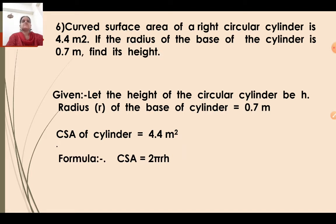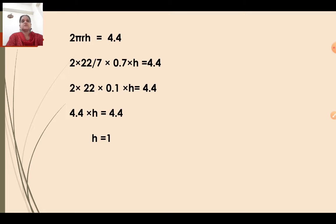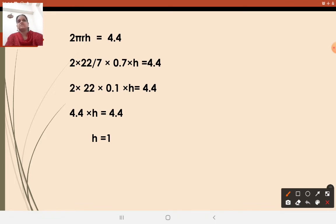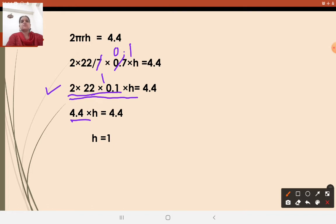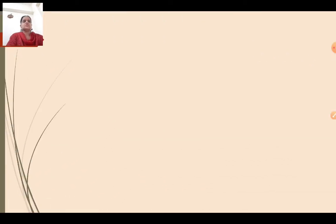The formula is curved surface area equals 2πRH. So 2 into 22/7 into 0.7 into H equals 4.4. The 7 in the denominator cancels with 0.7 to give 0.1. So 2 into 22 into 0.1 into H equals 4.4. Since 22 into 2 is 44, and 44 into 0.1 is 4.4, we get 4.4H equals 4.4. Therefore H equals 1. The height of the cylinder is 1 meter.